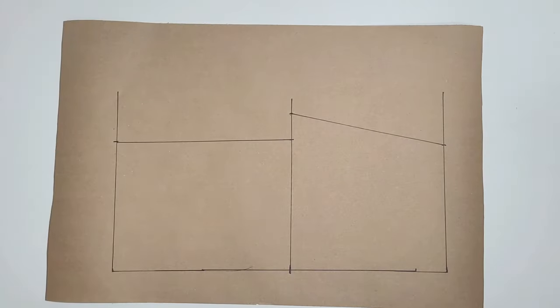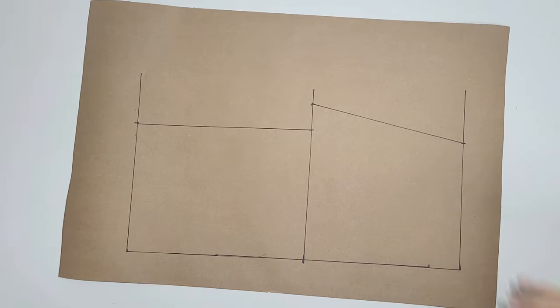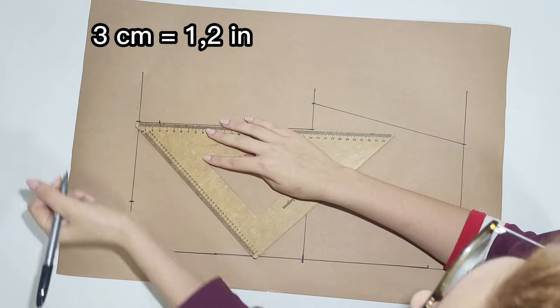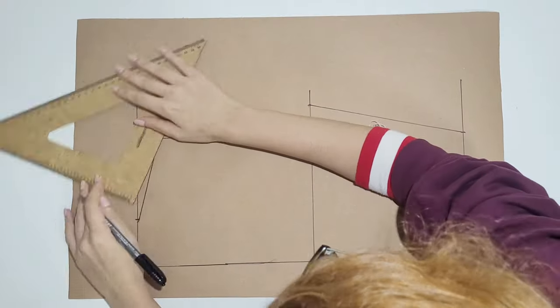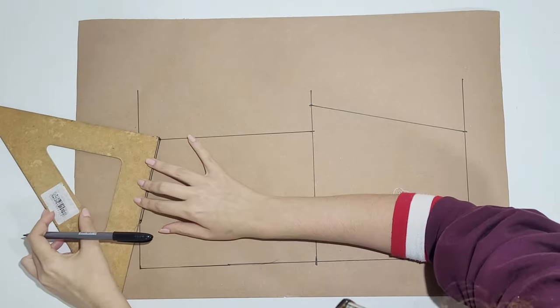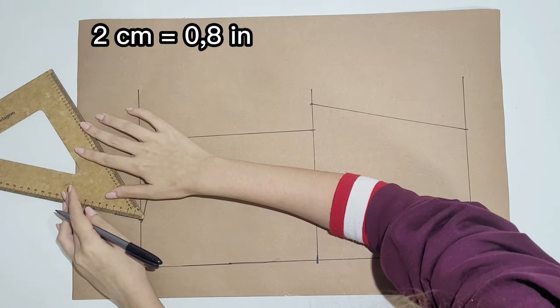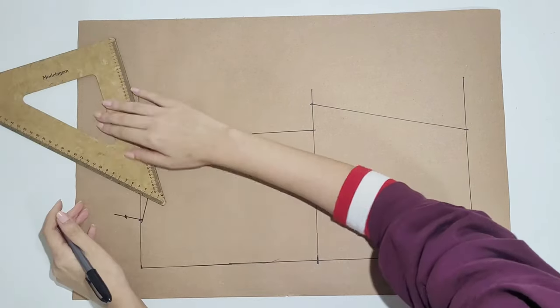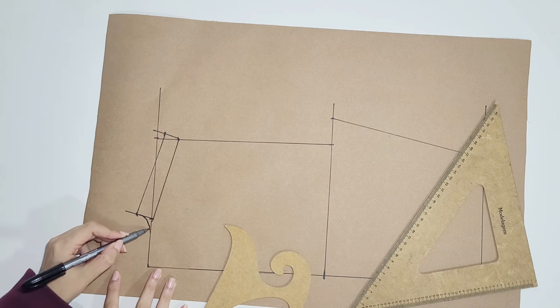Now for the back, you start with the same base as the front. Mark the neck measurement to the right. Drop 3 cm at the shoulder and connect the lines. Now use the ruler or a notebook to draw a line up with a 90 degree angle. And mark 2 cm on each side. Connect the lines. Now draw a curved line as I'm showing in the video.